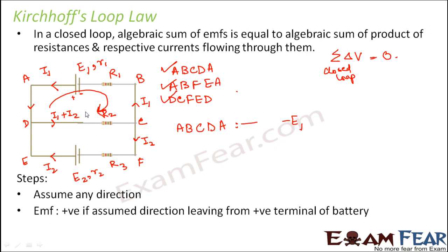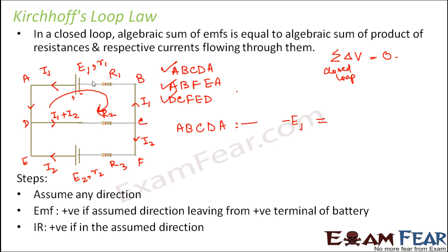In this loop you have just one cell, so you have one EMF. Step 3: the IR product (current × resistance) will be positive if the current is along the assumed direction. The first resistance is R1. The current flowing through R1 is in the direction opposite to the assumed direction, so this term is −I1·R1. The next resistance is R2, and the current through R2 is I1 + I2, also in the direction opposite to the assumed direction, giving −(I1 + I2)·R2.